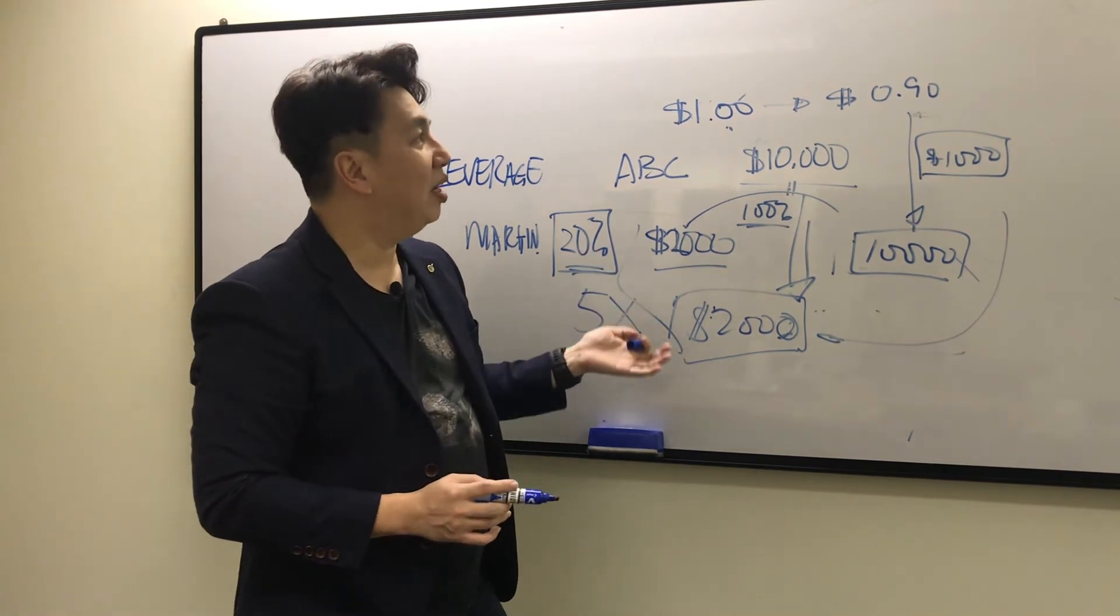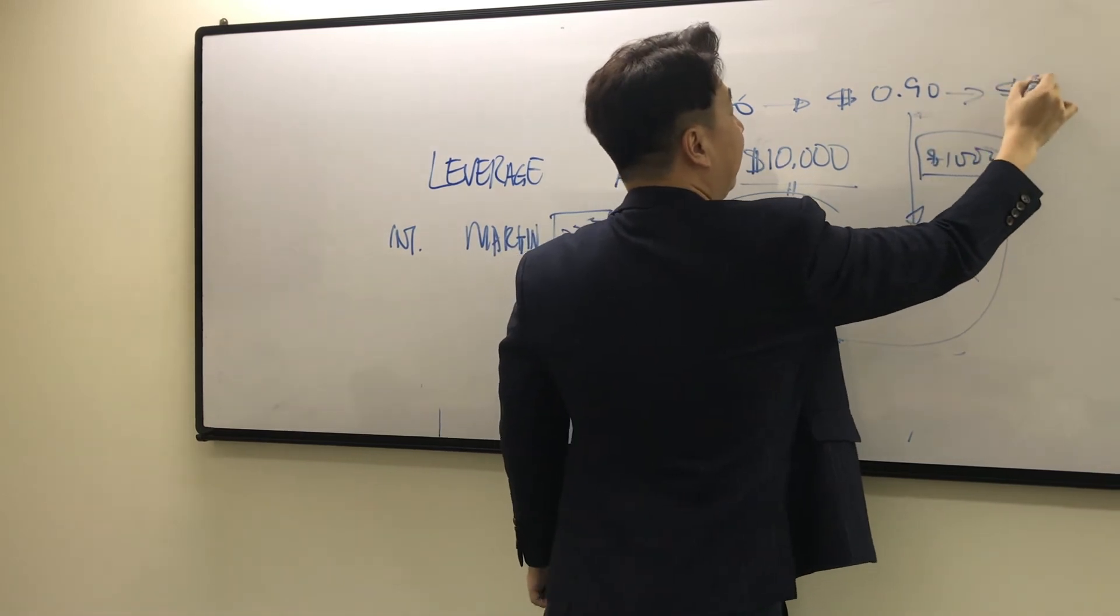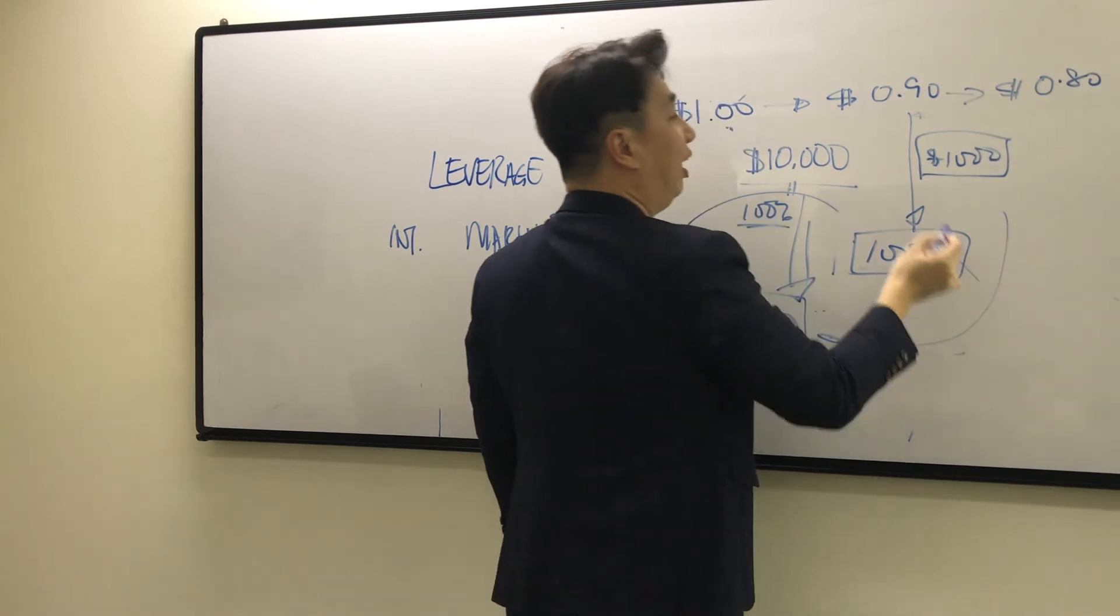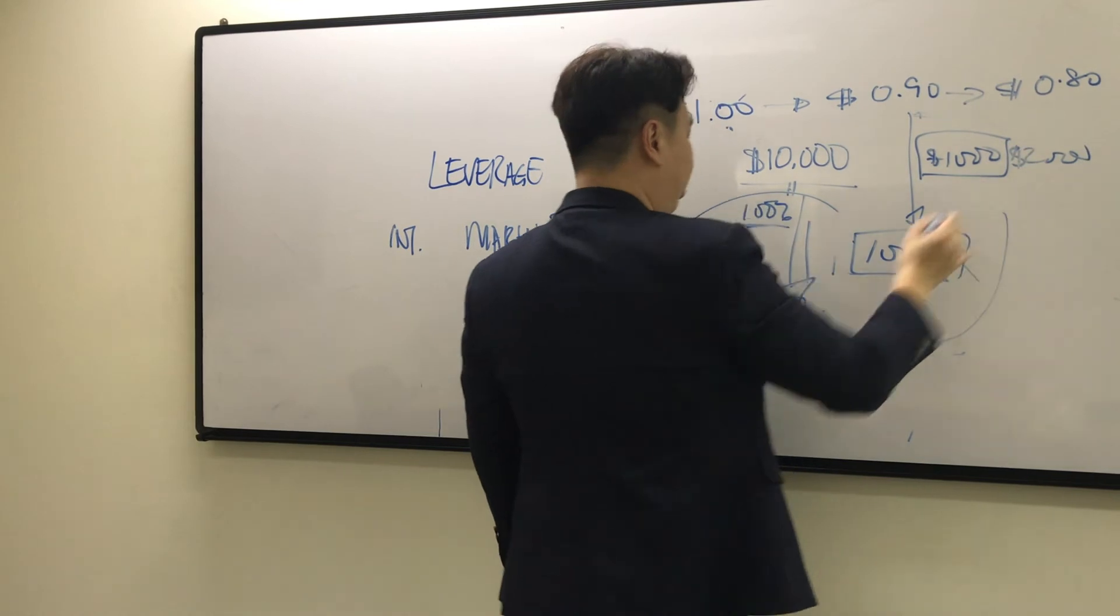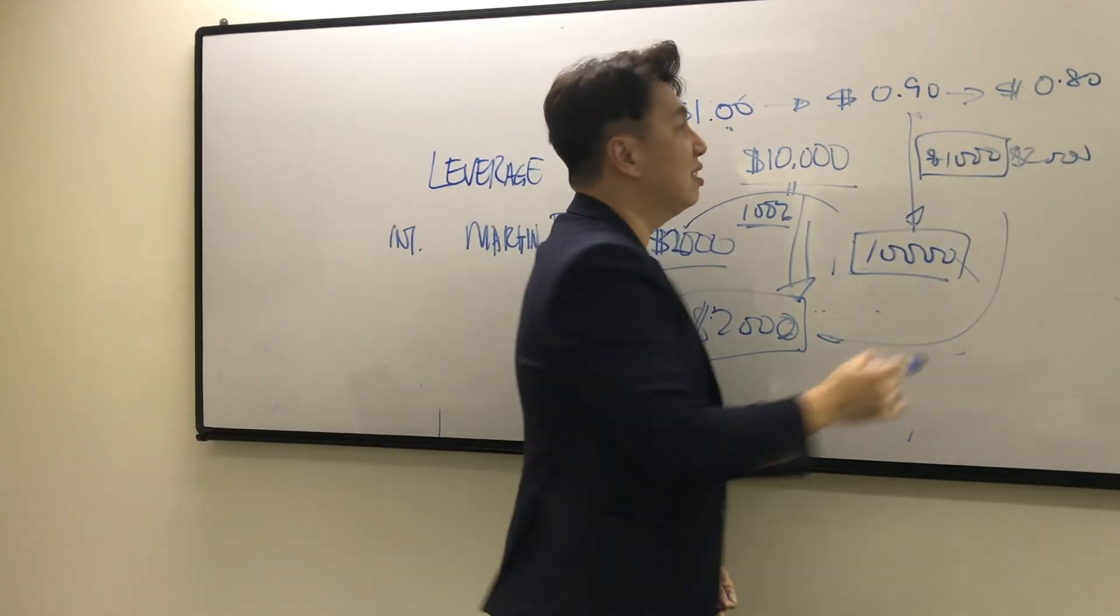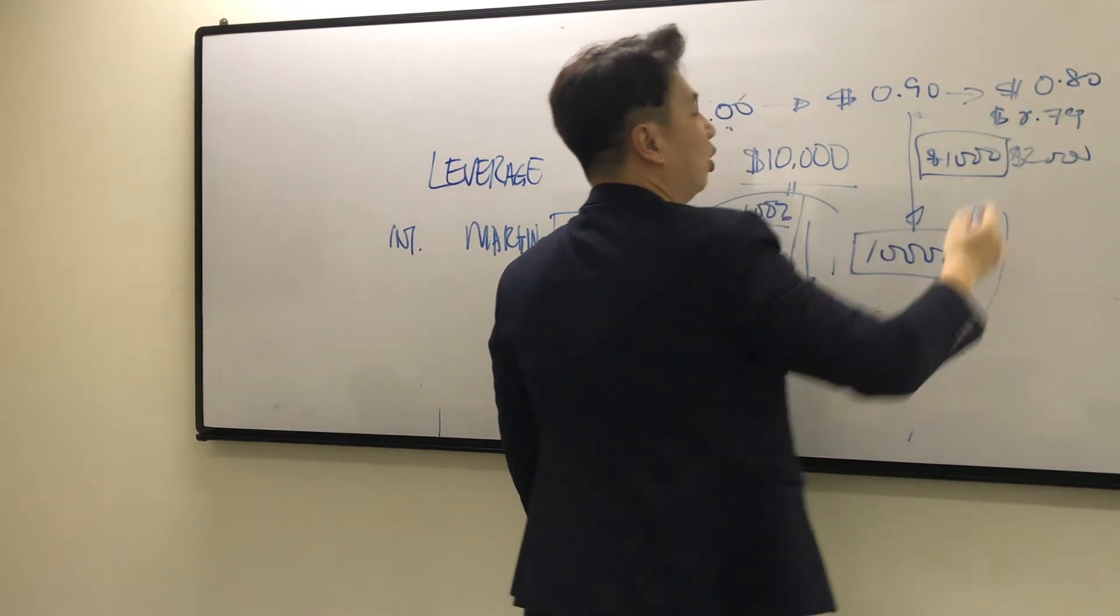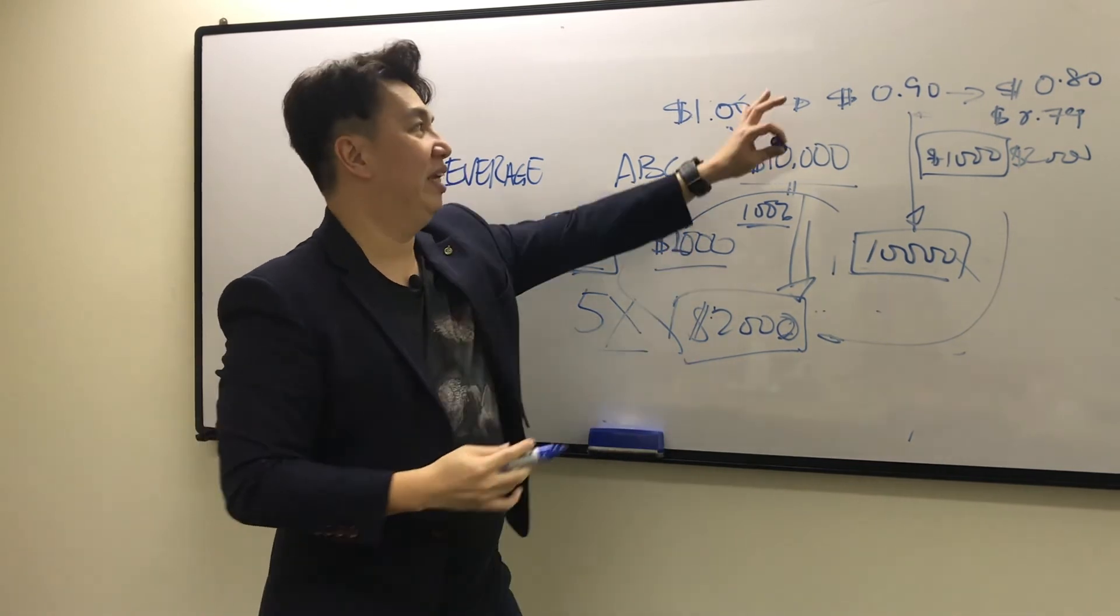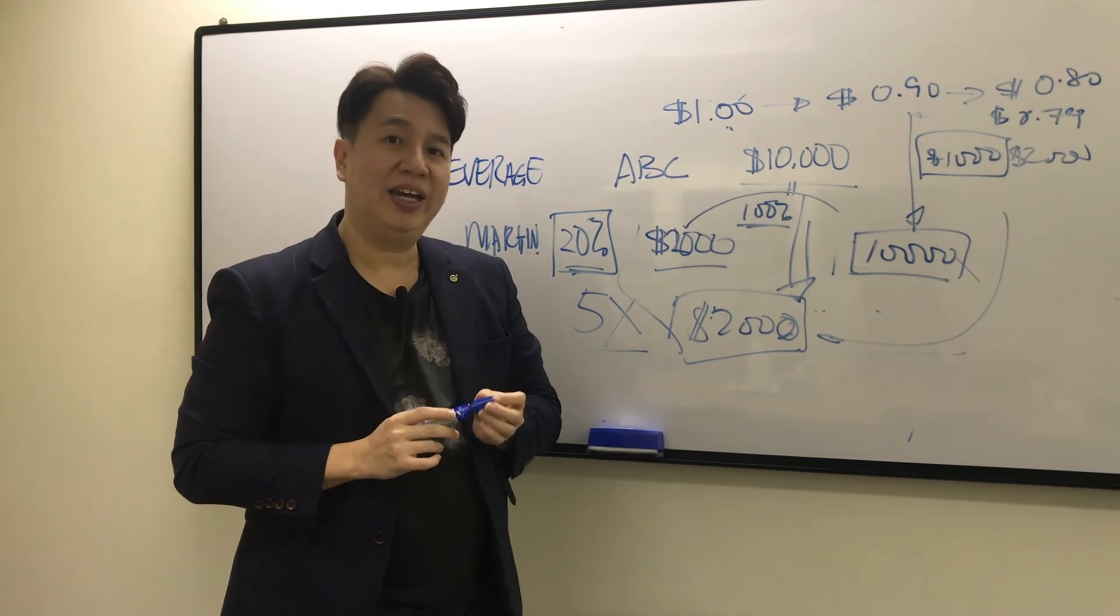But what happens if your stock price dropped from 90 cents to $0.80? In that case your loss becomes $2,000, so all your free balance will be gone. Anything lower than $0.80, let's say $0.79, then you'll be asked to top up your account to maintain this share at this price. That's what we call a margin call.